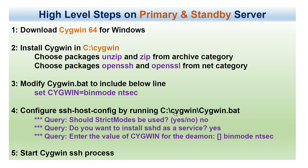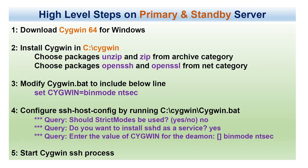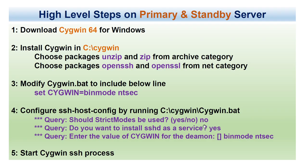The process requires two steps: first, add the host servers Win19Primary and Win19Standby into OEM, then add the databases. To enable OEM connectivity, we need to download Cygwin 64-bit for Windows, install it selecting specific packages, modify the Cygwin.bat file, and configure SSH.